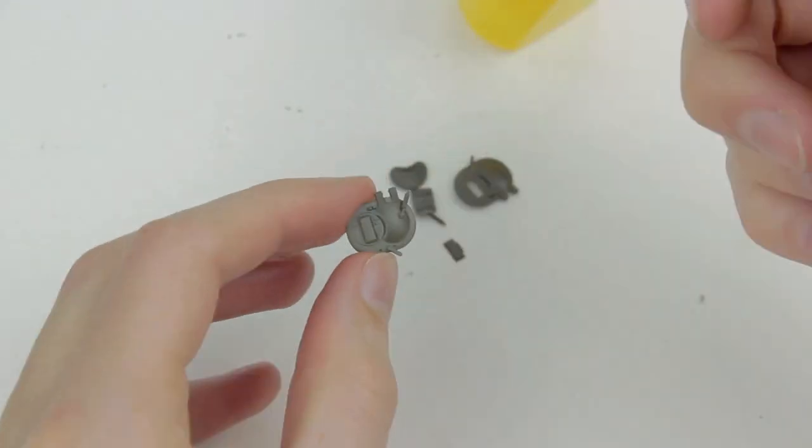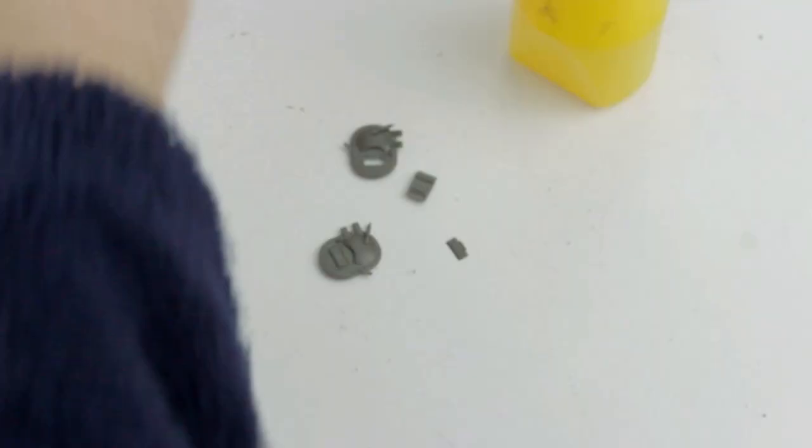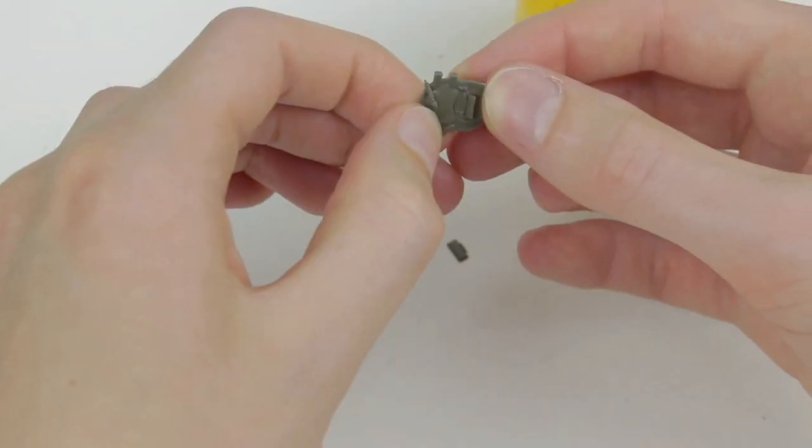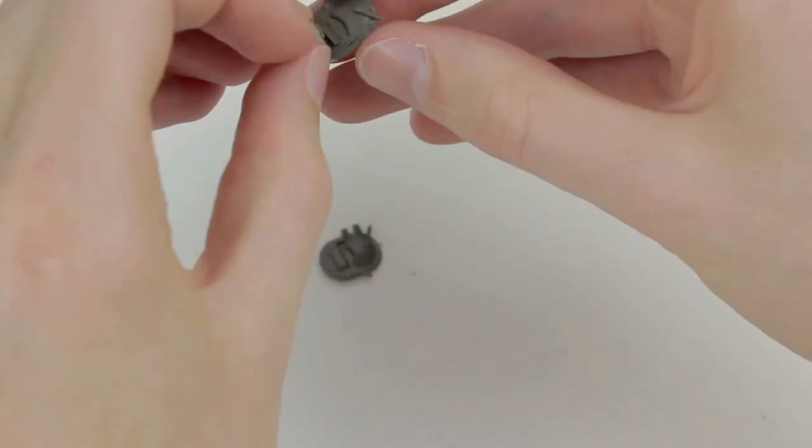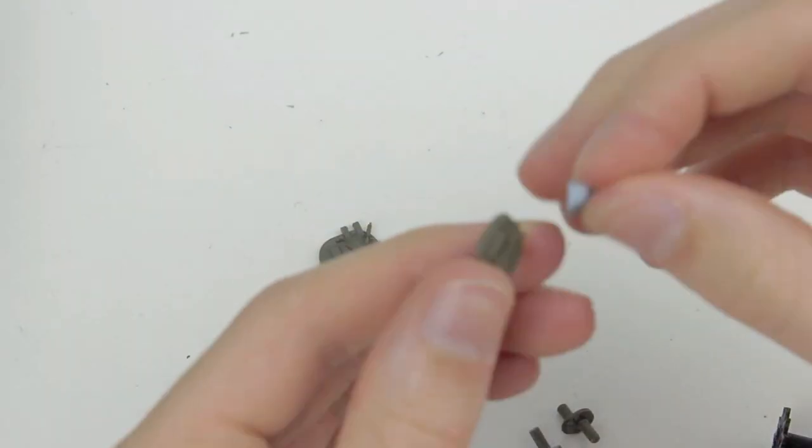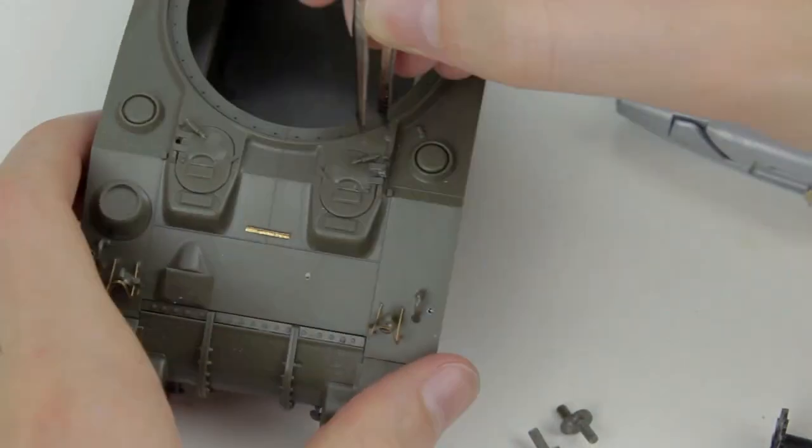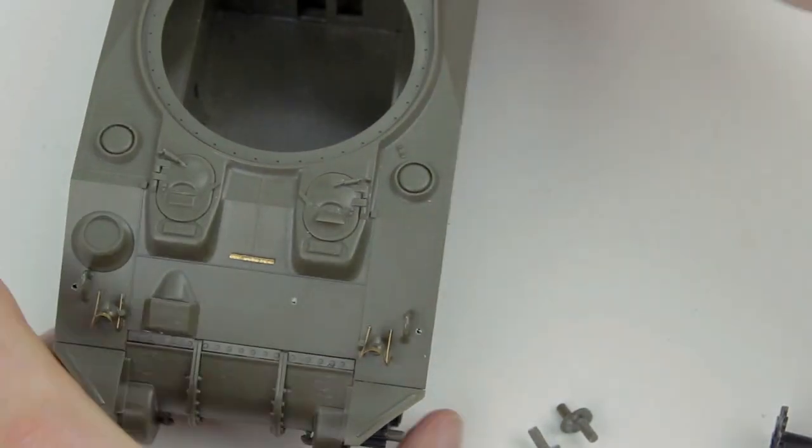The driver's hatch came with the parts to detail the inside so the hatch can be built in an open position. Clear plastic versions of the periscopes are included in the kit but I'm securing the opaque versions in place temporarily with blue tack until after the kit has been painted. Tiny little hinges mean that the driver's hatch doesn't have to be glued in place.